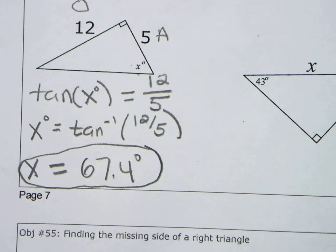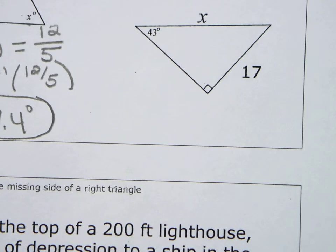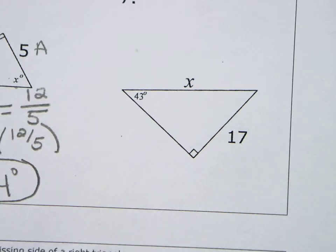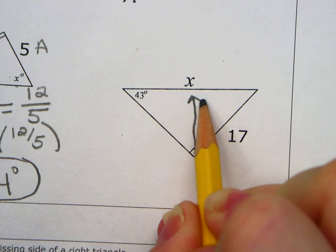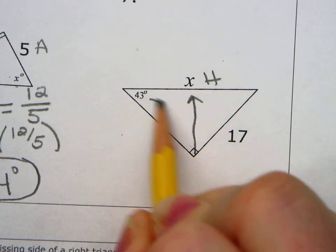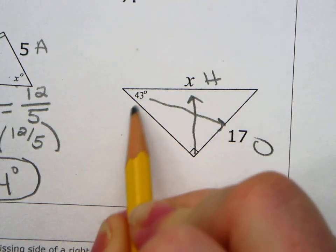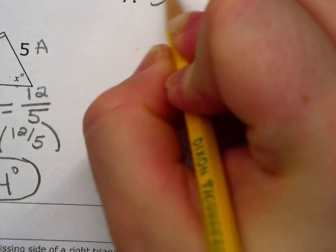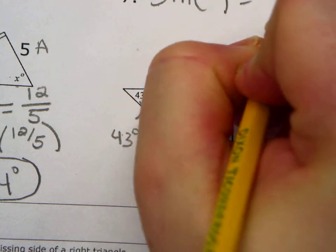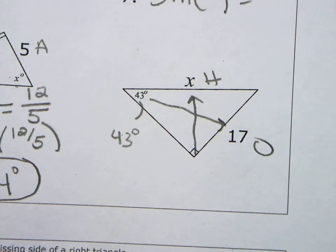All right. Last one like this. Number seven. All right. What are we given now? So this is my H and this is my O. That's a 43 FYI. Okay. So O and H is what? That's your sine. So sine of equals. What goes in the parentheses? The angle.